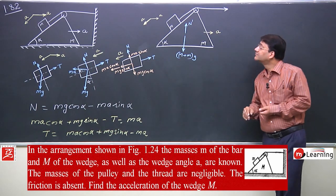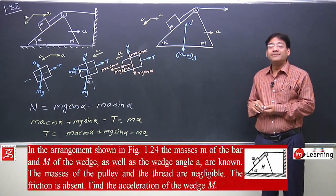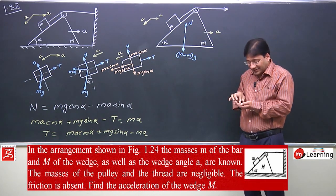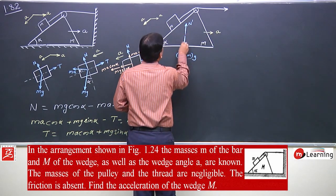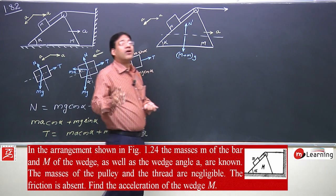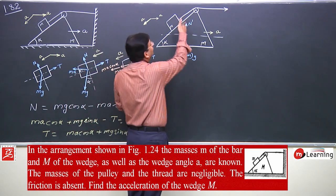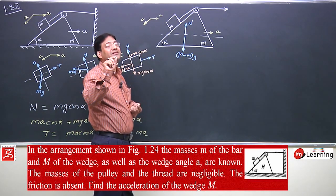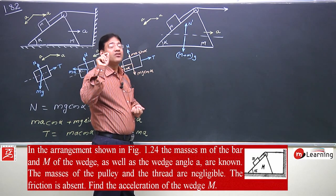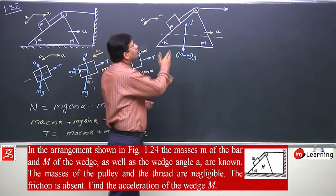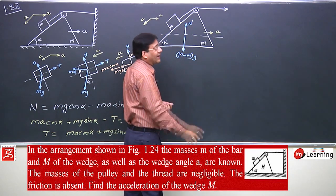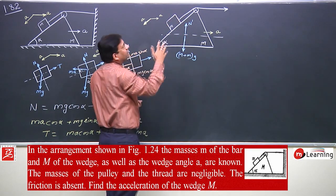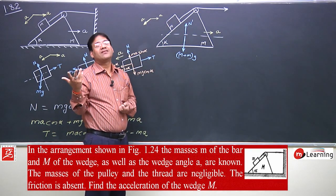These are the free body diagrams. The coordinate axis for this system is horizontal and vertical, because the normal reaction force is in the vertical direction and we never prefer resolving reaction forces. The acceleration of this body is horizontal, mg is vertical, and normal reaction is vertical — so horizontal and vertical is the best choice of axis.